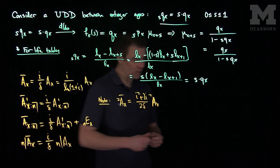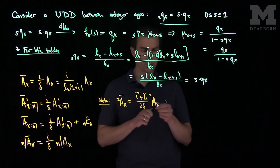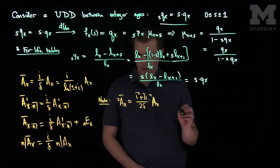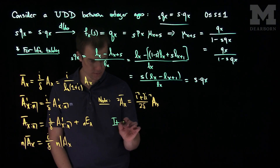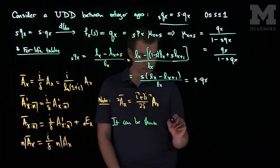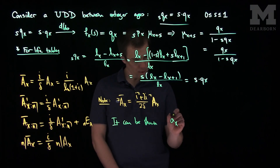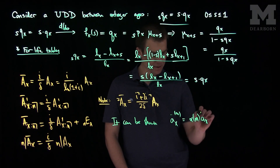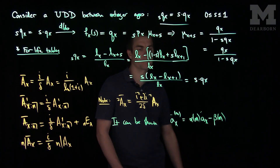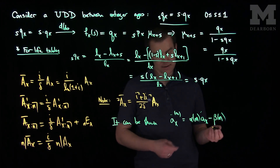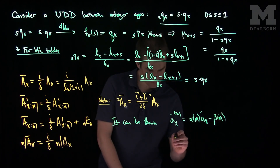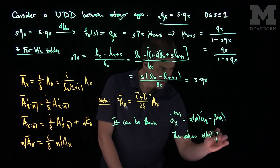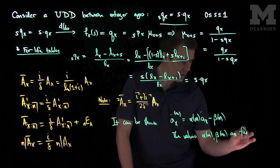We get corresponding relationships for annuity features. For annuities, we will have two parameters alpha(M) and beta(M). It can be shown that for an annuity-due with M payments, A_x double-dot M equals alpha(M) times A_x double-dot minus beta(M), where alpha and beta are written in terms of i and d and the corresponding rates. The values alpha(M) and beta(M) are found in tables.